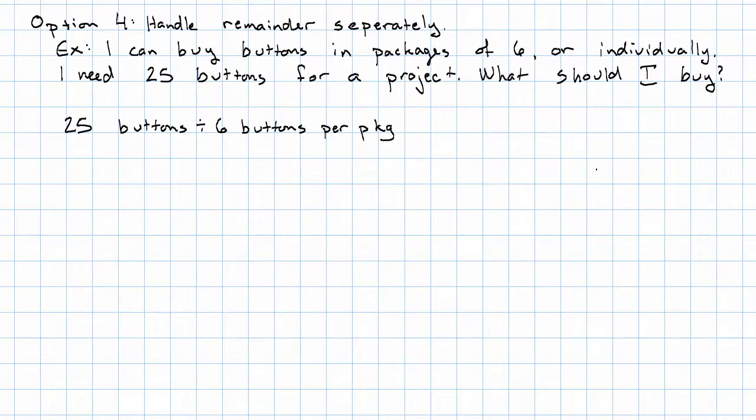And these are fairly small numbers, so I'm just going to work this out by hand. Right? 6 goes into 25 four times. With 1 left over. So, that's 4 packages and 1 left over. So, I should buy, right, because this is an option, I should buy 4 packages, and then also, one individual button.